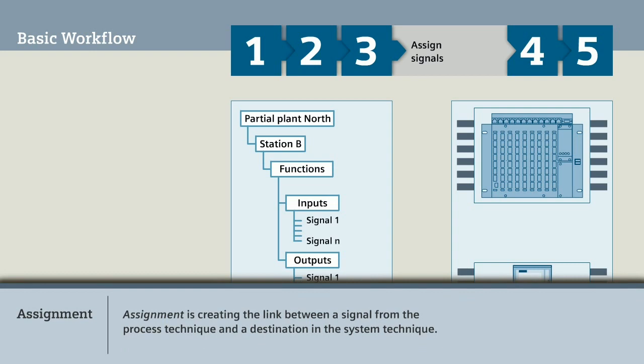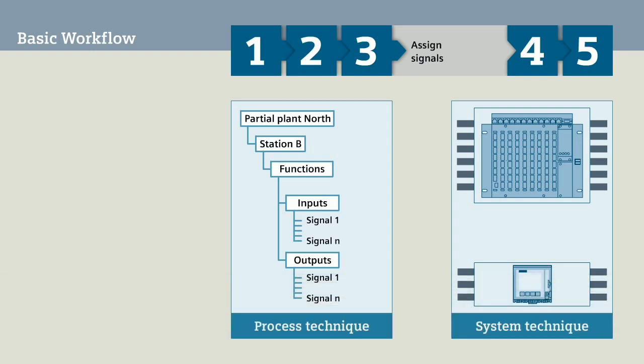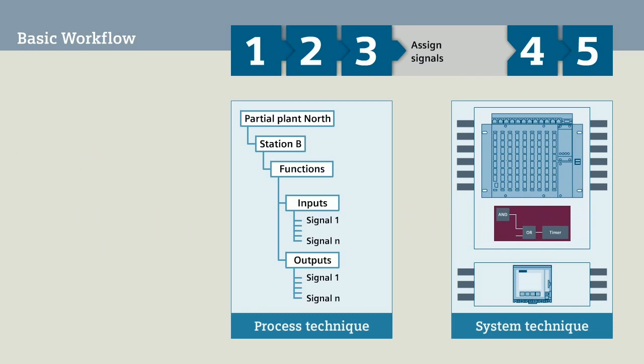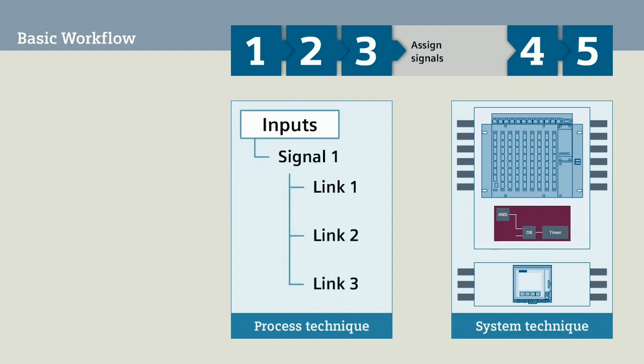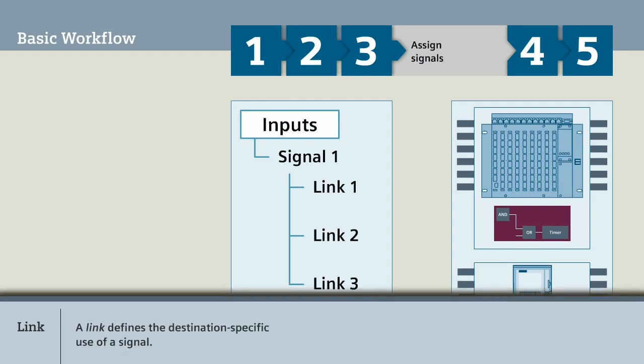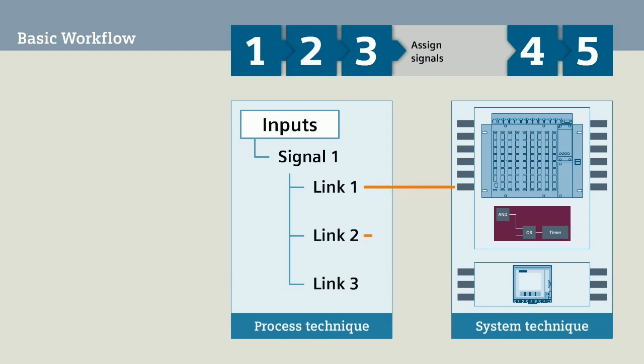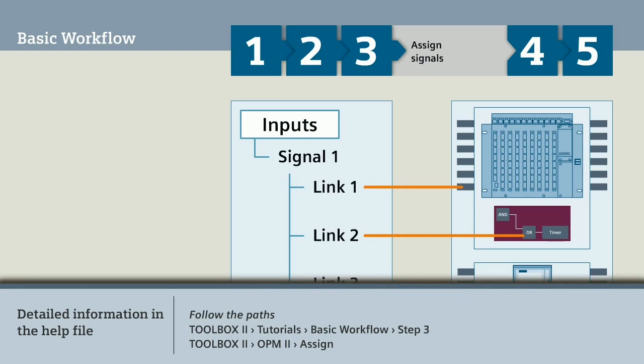Assignment is creating the link between a signal from the process technique and a destination in the system technique. Destinations are, for example, the inputs and outputs of the automation units. But you can also link functions with signals, functions that you created for these automation units with CAEX+. So that you can assign a signal to different destinations, the signal is divided into several links. A link defines the destination-specific use of a signal. You assign the links of a signal to the matching destinations. You can find detailed information about assignment in the help file via the displayed path.